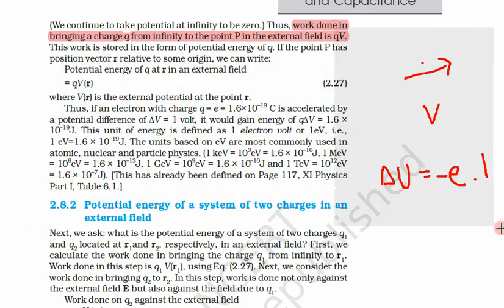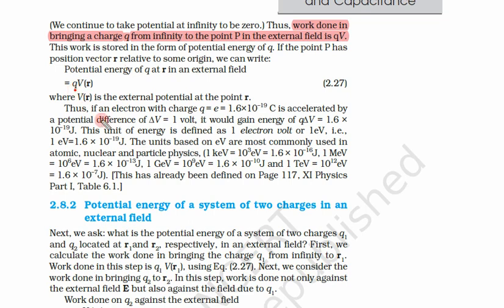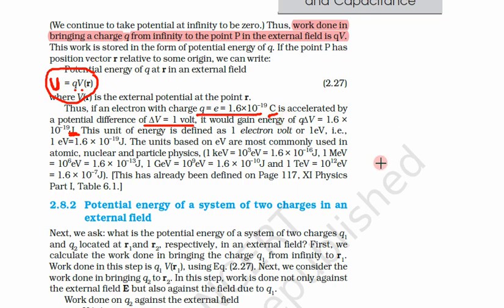Remember the definition of electron volt: it is simply when we take an electron and accelerate it with a potential of 1 volt. The charge on the electron is 1.6 × 10⁻¹⁹ and ΔV is 1, so the result is 1.6 × 10⁻¹⁹. This is energy, so it must be in joules — it is no longer in coulombs. Now let us move to the second part.